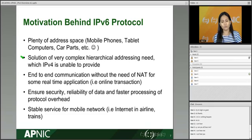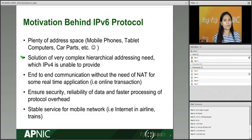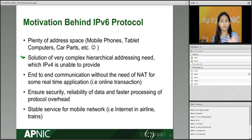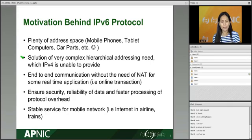IPv6 is also seen as a solution for very complex hierarchical addressing, which IPv4 cannot provide. The idea was to have a more hierarchical distribution process — from IANA to the RIR, from RIR to LIR, from LIR to end users — so you can see from the IP address which bits are used for each leg of the distribution. This hasn't exactly happened as planned, but it was seen as a solution in the early days.